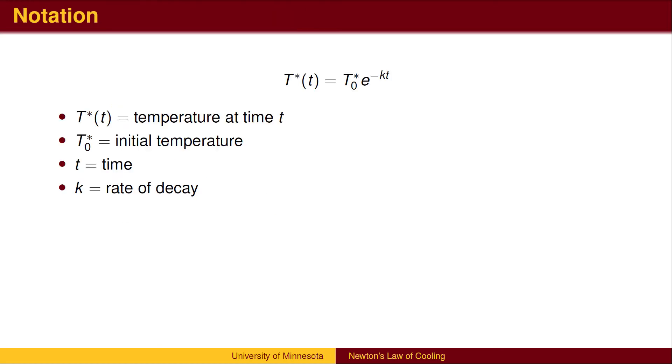We use the standard exponential decay model, where T*(t) is the temperature at time t, T*_0 is the initial temperature, t is time, and k is the rate at which the temperature decreases. Since the temperature is decreasing, we use a negative sign in the exponent, so that k is a positive rate.